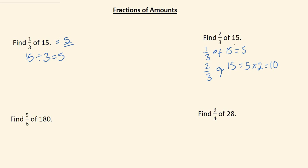In effect what we end up doing is we find 1 third of 15 by dividing by the 3, and then whatever answer we get we multiply that by the numerator which in this case was 2.